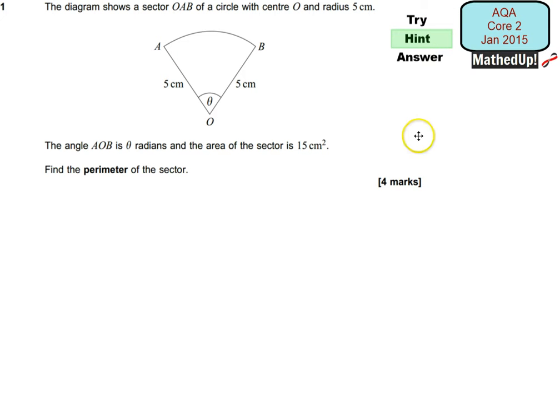For the next part of this video, I'm just going to give you a hint as to how you can go about answering this question. We're told that the diagram shows a sector OAB of a circle with centre O and radius 5 centimeters. The angle AOB is theta radians and the area of the sector is 15 centimeters squared. We need to find the perimeter of the sector.